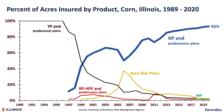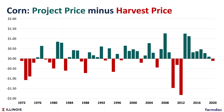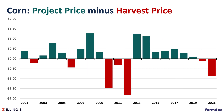93% of the acres are insured under RP, and all other policies are really low, including RPHPE, which is well below 5%. Most people use RP, so why would the harvest price be higher? We see that the harvest price is above the projected price in about 30 to 40% of years, and those years have happened periodically over the last 40 years. Looking more recently, we've seen the harvest price above the projected price in 2021, 2020, and 2012 — and 2012 was a big year because that was the drought year.